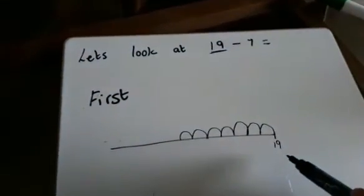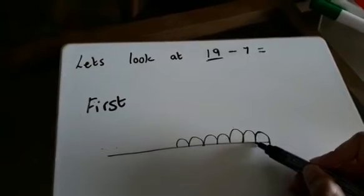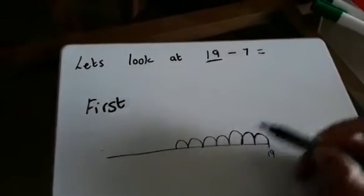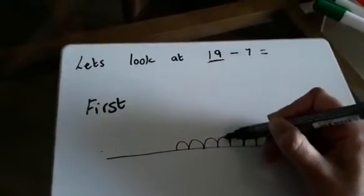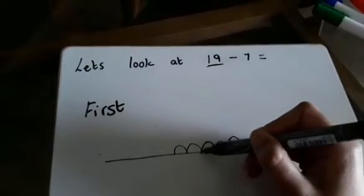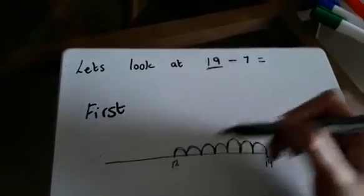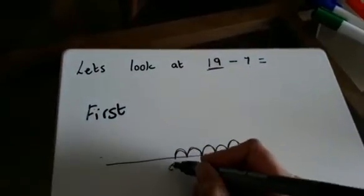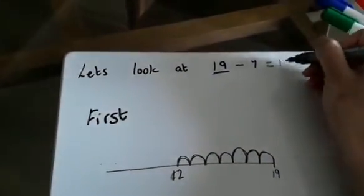Now we're going to count backwards from 19. 18, 17, 16, 15, 14, 13, 12. So 19 take away 7 equals 12.